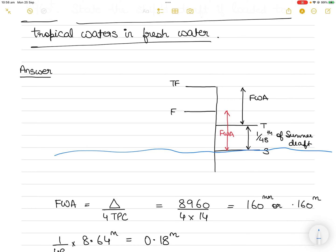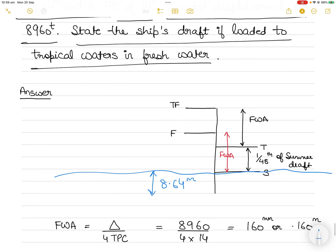The ship has been loaded until the summer draft. The summer draft is 8.64 meters — that is, from the water level to the ship's keel it's 8.64 meters. The displacement is 8960 tons. Now the ship is going to be loaded in tropical freshwater, up to the tropical freshwater load line.